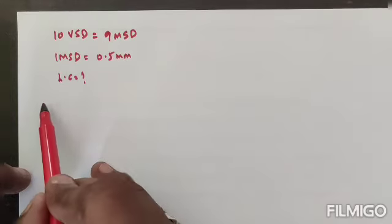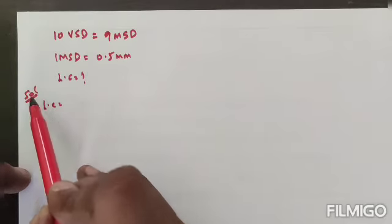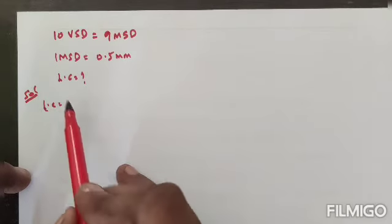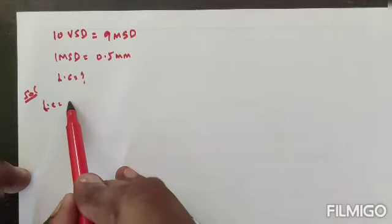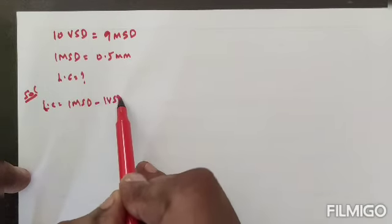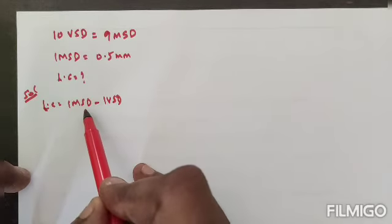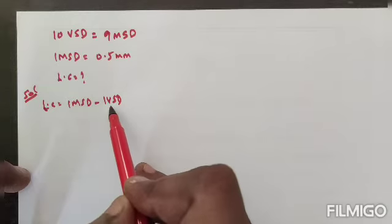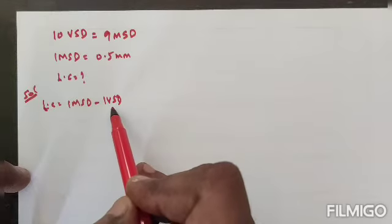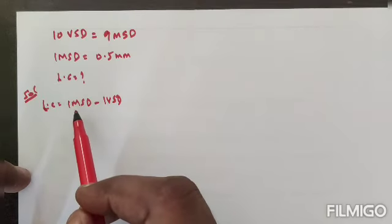So we know the least count formula of the vernier caliper. That is, one main scale division minus one vernier scale division. So we want to substitute the one MSD value and the one VSD value. I'm going to find the easy way.